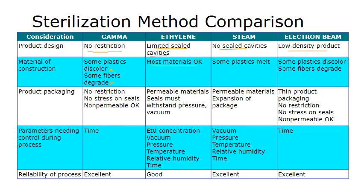For ethylene oxide, the big advantage is that most materials are okay. For electron beam, plastics can discolor or degrade. Regarding product packaging, there's no restriction on gamma — there's no stress on the seals and non-permeable materials are okay.